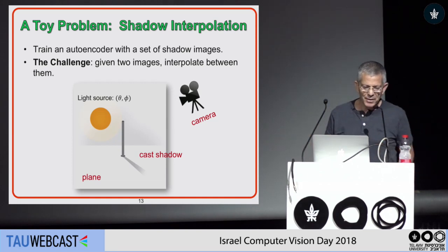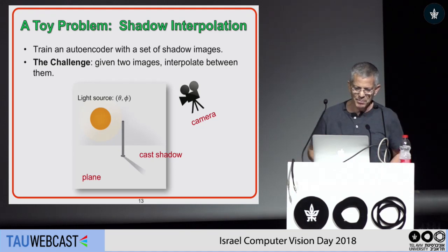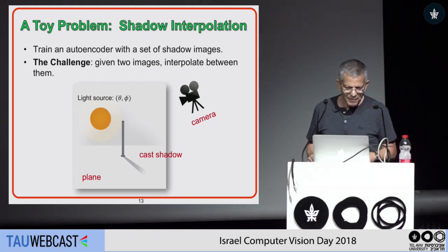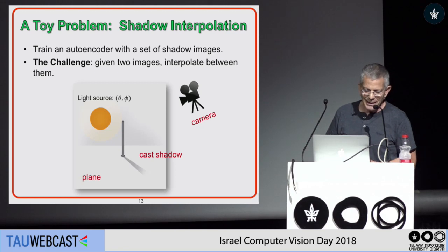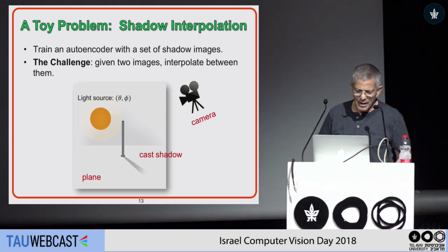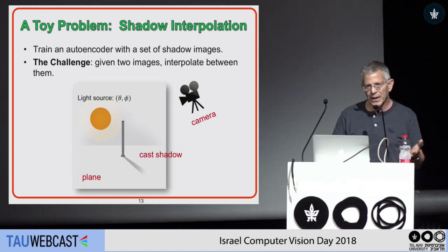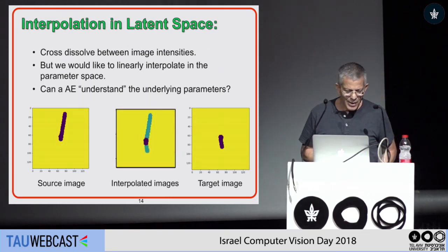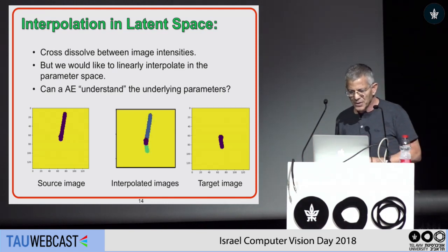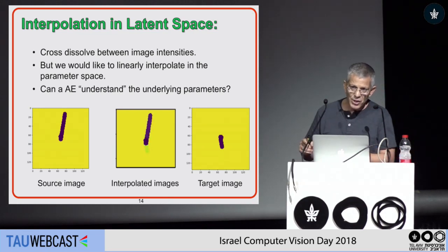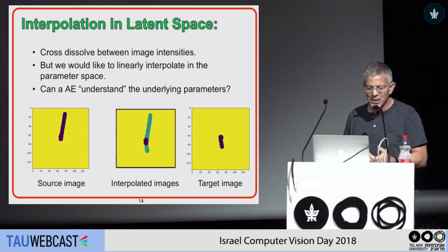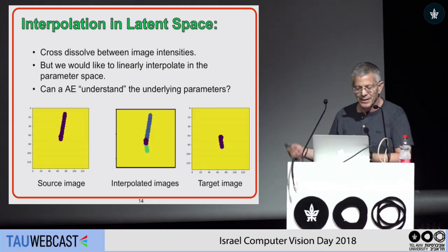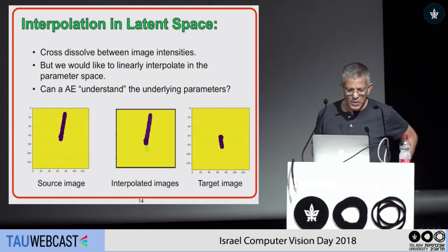Toward this goal, we take a very simple toy problem: shadow interpolation. We have a plane with one pole, a light source parameterized by theta and phi — two degrees of freedom — and a camera. What we would like to do is interpolate between two shadow images. On the left you see a source image, on the right the target image, and in the middle an animation of the interpolation in the image space. What we see is just a cross-dissolve between pixel intensities, and of course this is not the result we would like.